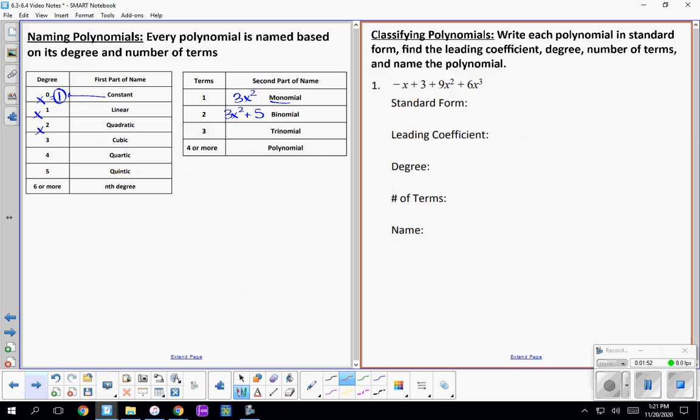So first, we're going to write this in standard form, and we're just rearranging it. We're looking for that highest exponent. So we have 6x to the third, and then plus 9x squared. Finally, we're going to use our x to the first. And then lastly, plus 3, which is just our constant. Our leading coefficient here is 6 because that's the coefficient in front of the x with the highest exponent.